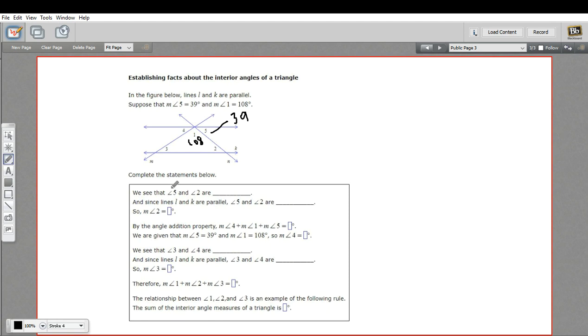Let's see if we can walk through these questions. It says we see that angle five and angle two are something. Well, if we look at this as a transversal with line N cutting L and K, five and two would be what we call alternate interior angles.